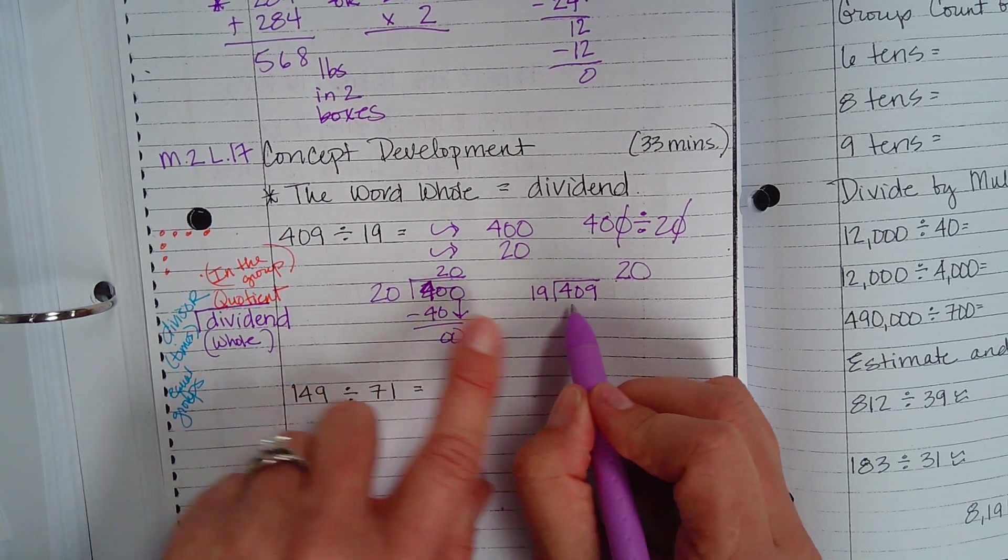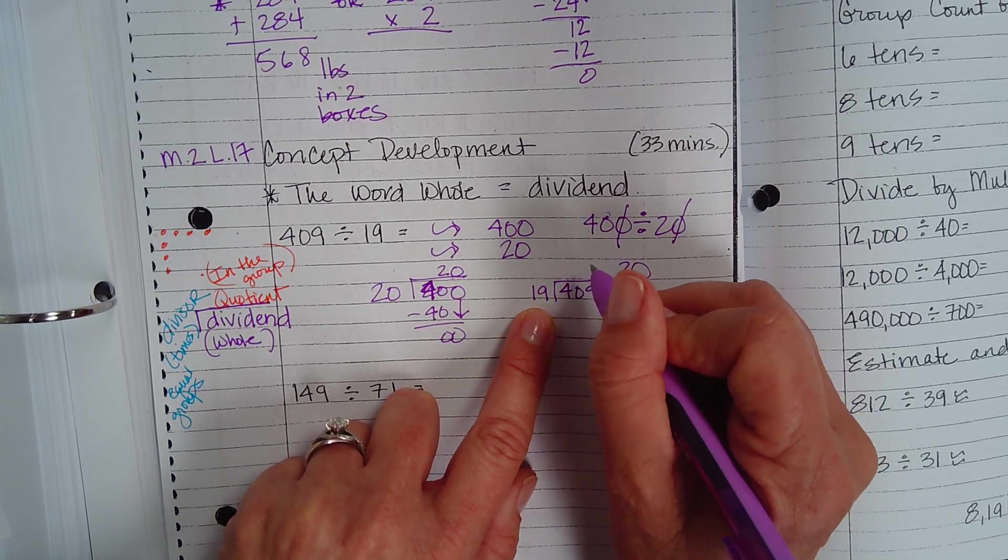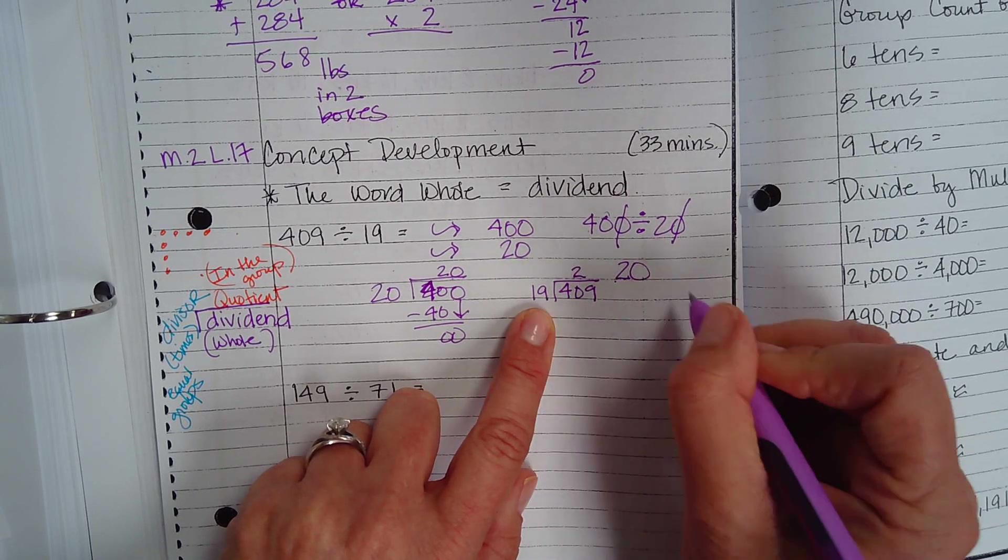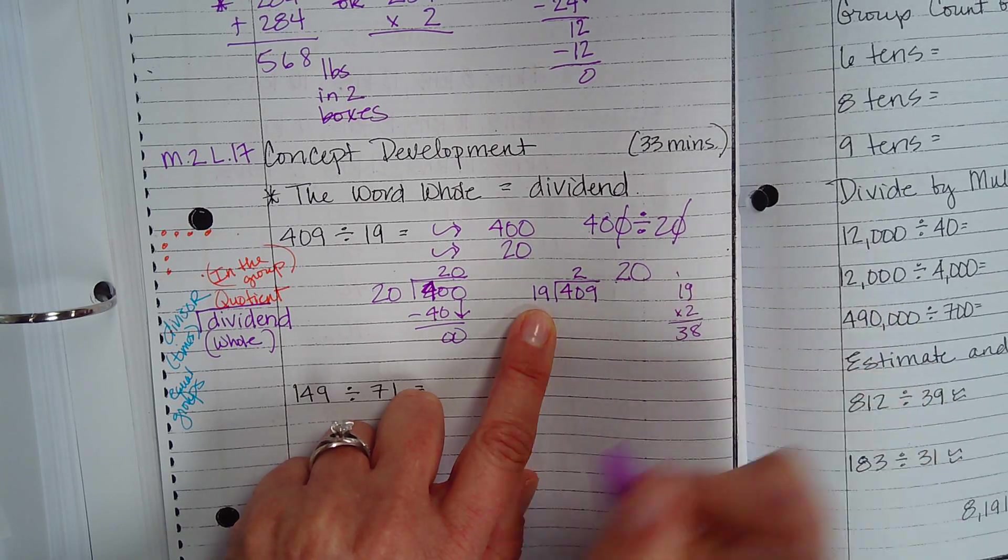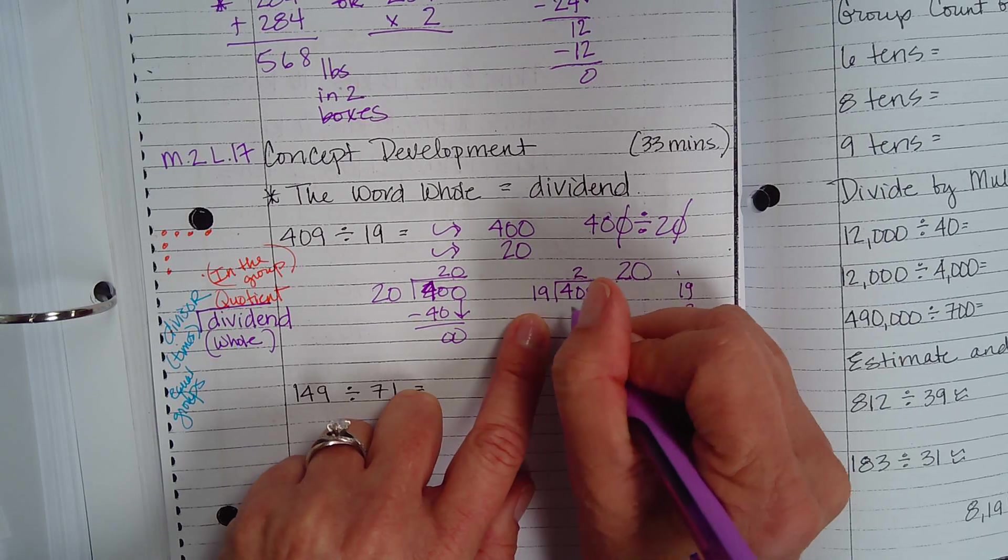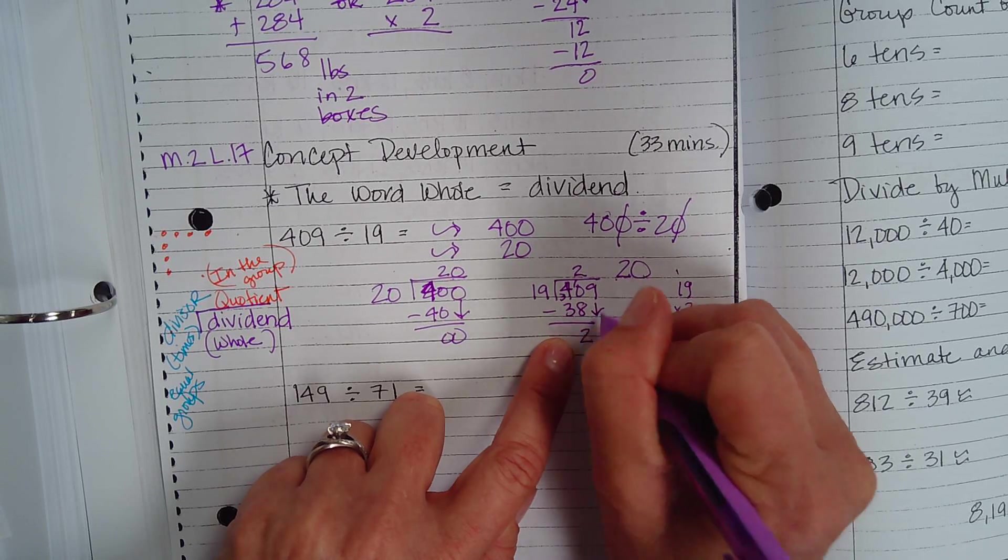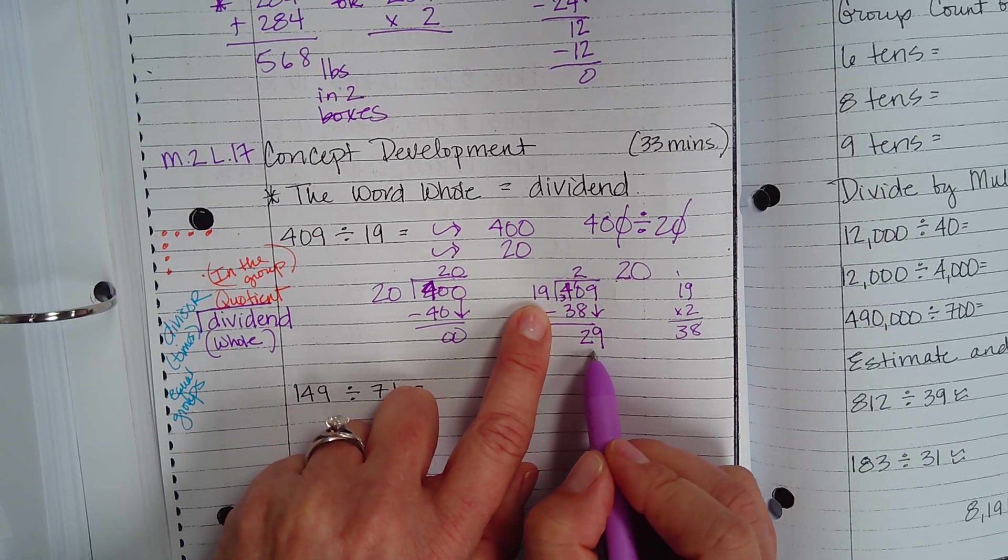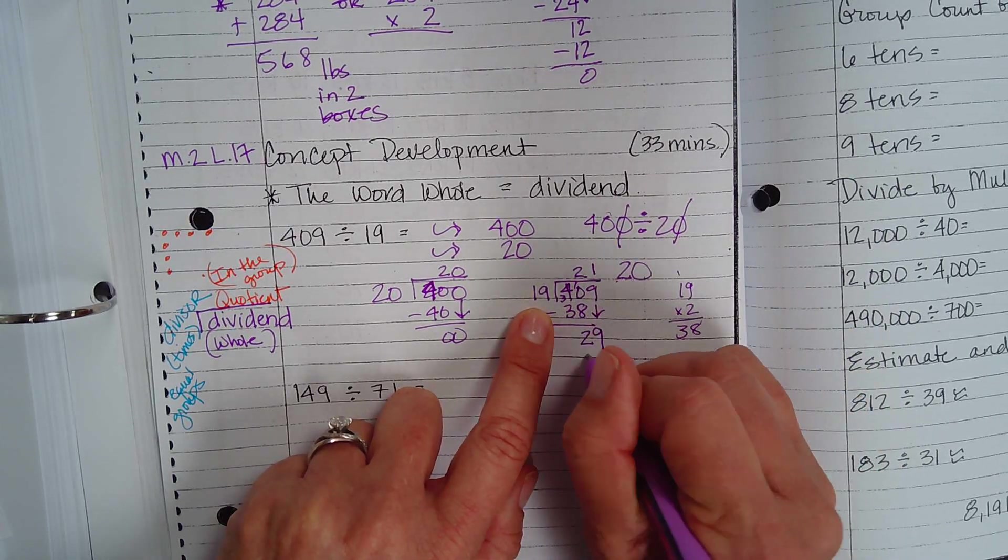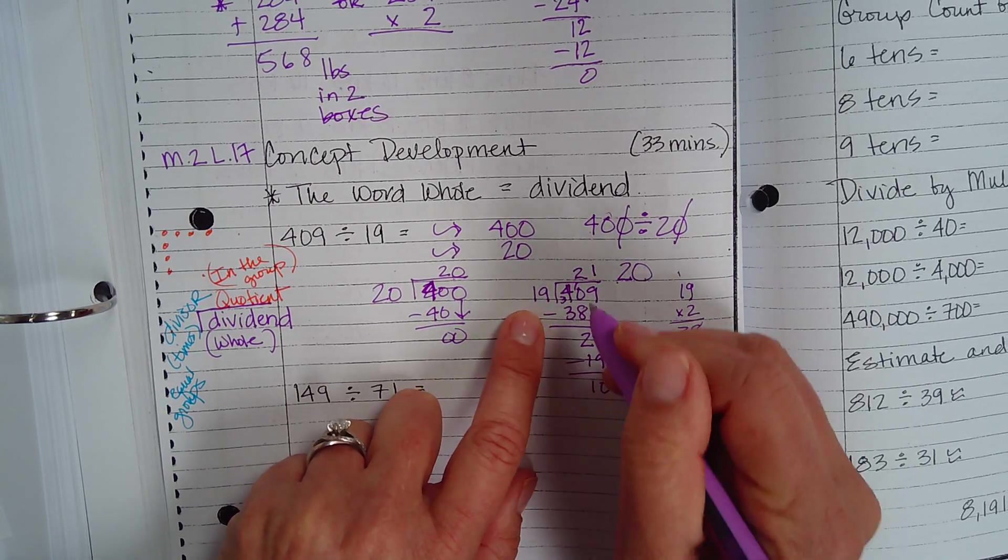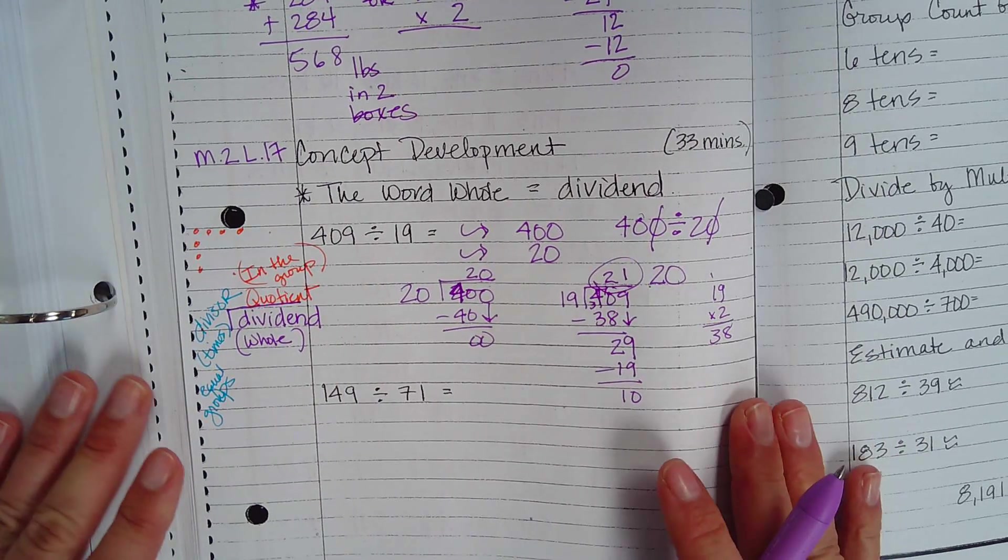So if we know that 20 goes into 40 two times, 19 will go about how many times? So 19 times 2 is what? It won't go twice, right? All right, so is our answer close? It's very close, correct?